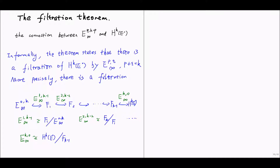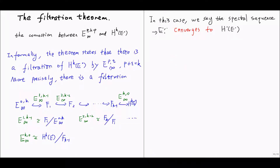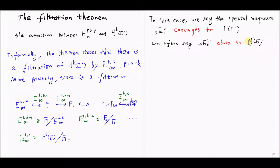And so on and so forth. In this case, we say the spectral sequence converges to the cohomology of the total complex. We often say an object in the spectral sequence on a certain page abuts to the cohomology of the total complex.